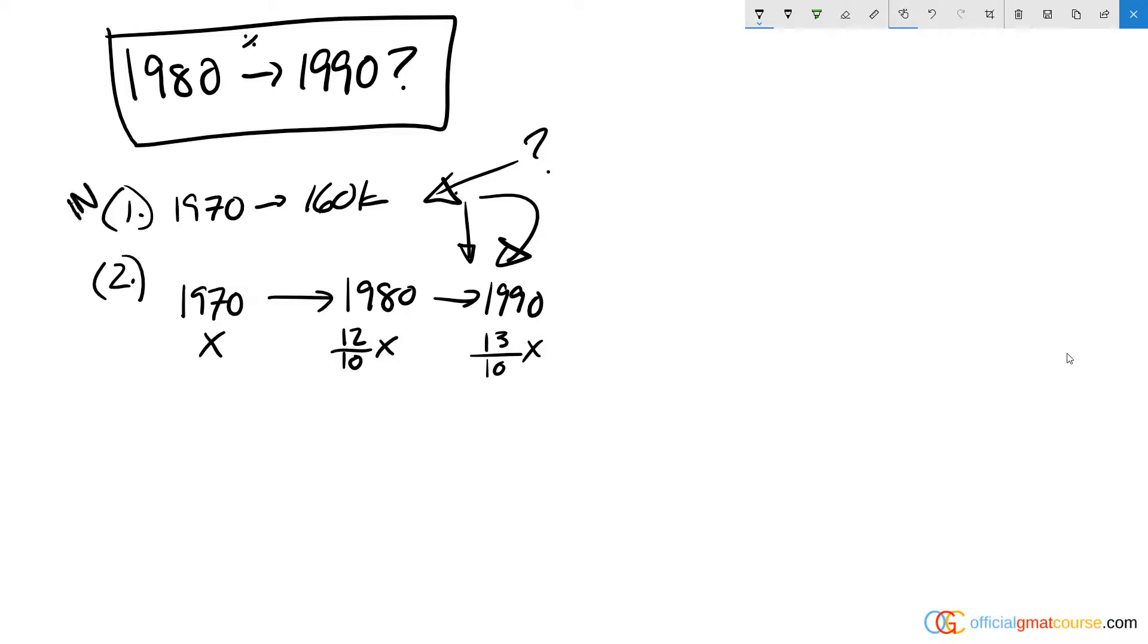So we know that this is insufficient. And if we go to statement two, from 1970 to 1980, we had a 20% increase. Whenever we're dealing with percent change, I always want to focus on the total that I end up with, not the percent plus the original value. So if I started with 100, I'd end up with 120 because I added 20%. And I could represent that as 12 tenths times 100, which is exactly what I'm doing up here.